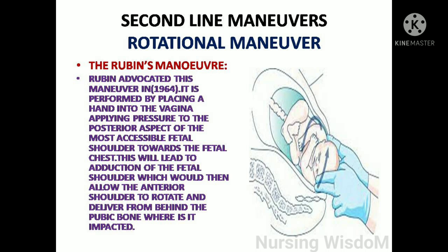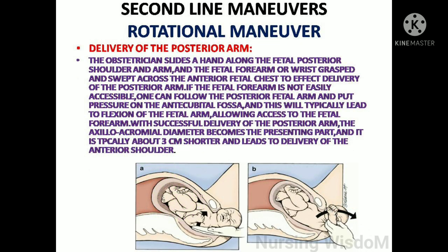Second-line maneuvers are also called rotational maneuvers. The first is Rubin's maneuver, advocated in 1964. It is performed by placing a hand into the vagina and applying pressure to the posterior aspect of the most accessible fetal shoulder towards the fetal chest. This leads to adduction of the fetal shoulder, allowing the anterior shoulder to rotate and deliver from behind the pubic bone where it is impacted.